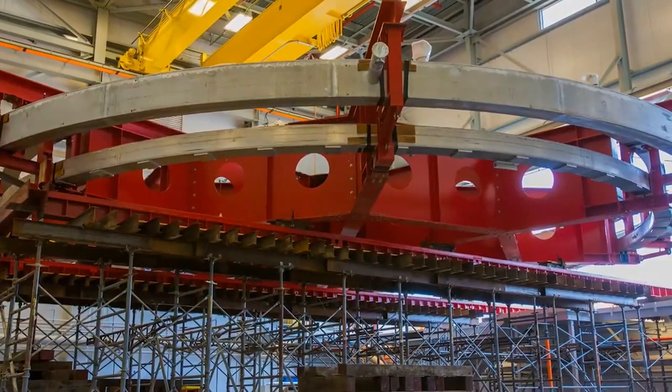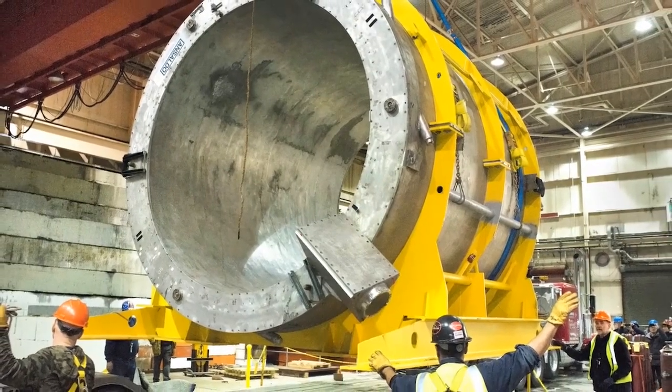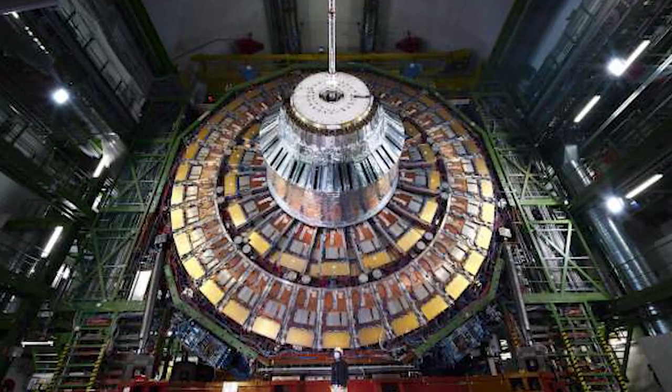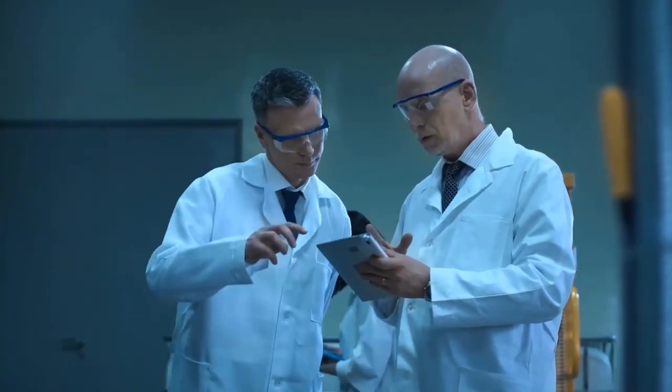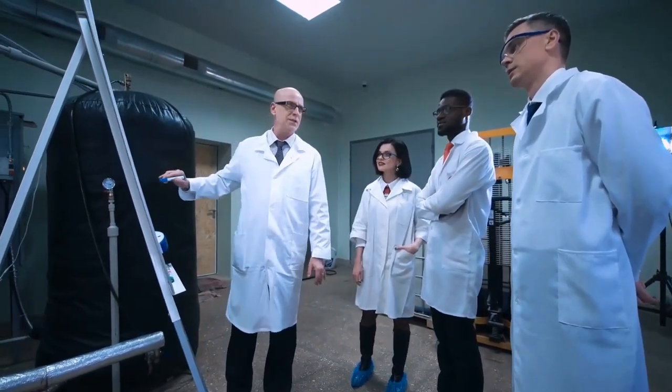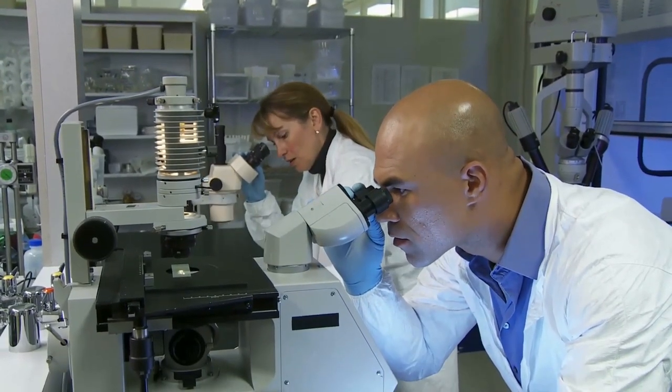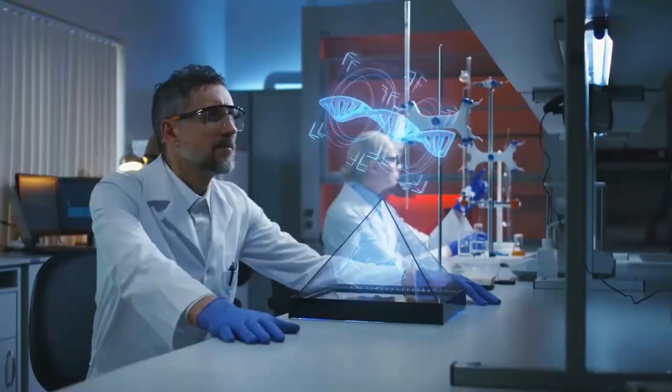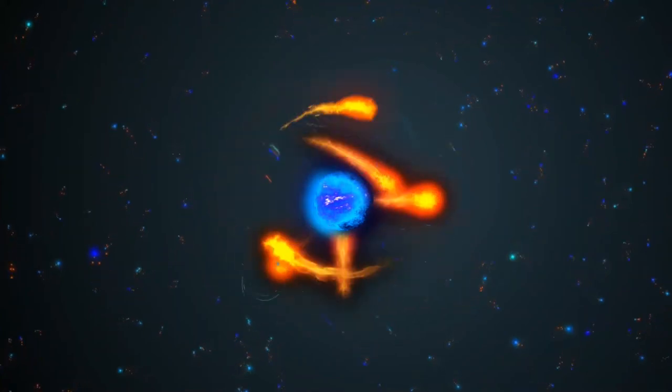Two of the four collision points around the circumference of the LHC are occupied by large general-purpose detectors. These include the compact muon solenoid, which can be thought of as a giant 3D camera, snapping images of particles up to 40 million times per second. The paths of the particles inside the detector are controlled by a gigantic electromagnet called a solenoid. Despite weighing 12,500 metric tons, it's quite compact, as the detector's name suggests. The middle word, muon, refers to an elusive particle similar to the electron but much more massive, which requires its own array of sub-detectors wrapped around the solenoid.